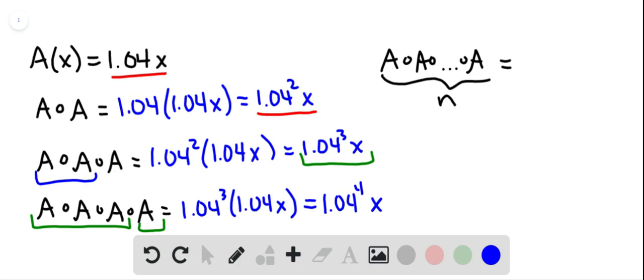So each of these represent the amount of money in the investment after another year has gone by. So this is one year, two years, three years, four years.